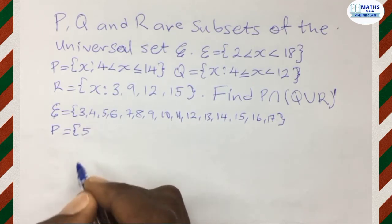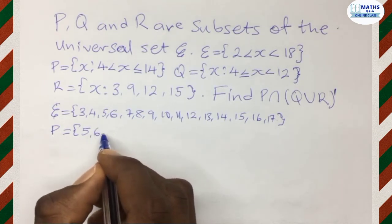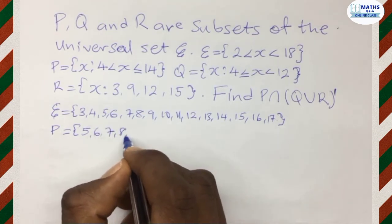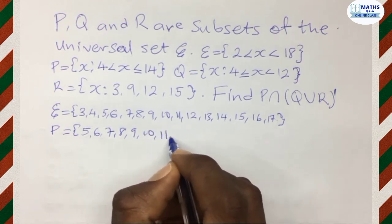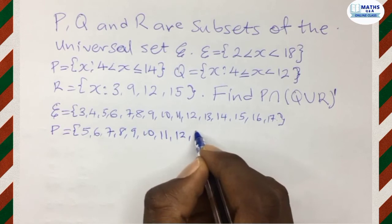we have x greater than 4. We have 5, so 5 is greater than 4. We have 6, 7, 8, 9, 10, 11, 12,